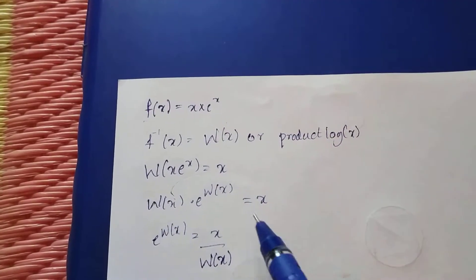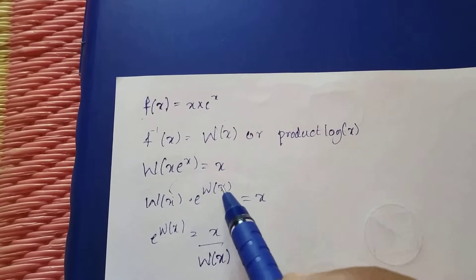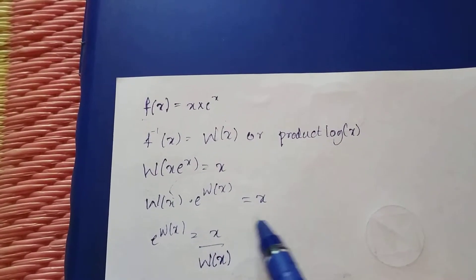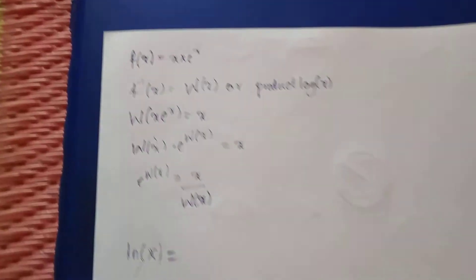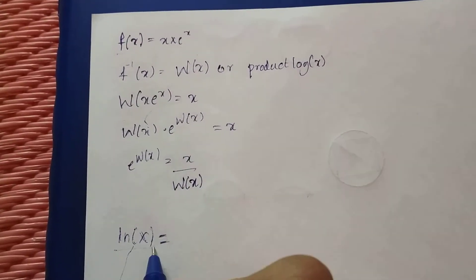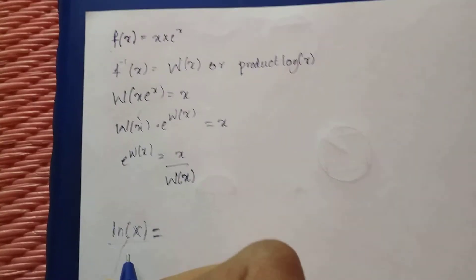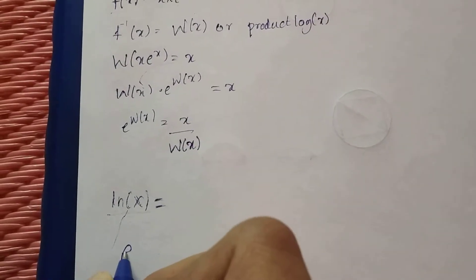If you transform this, you'll get that e^W(X) equals X divided by Lambert W function of X. So we will now begin with the series expansion for natural logarithm.